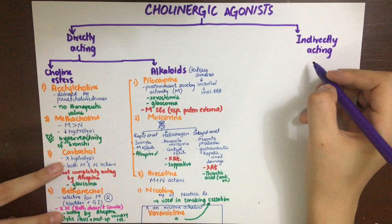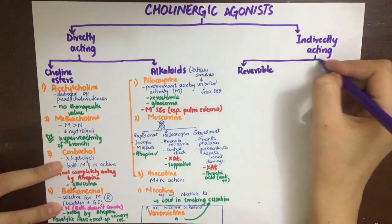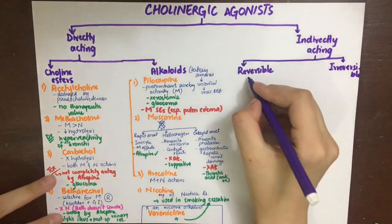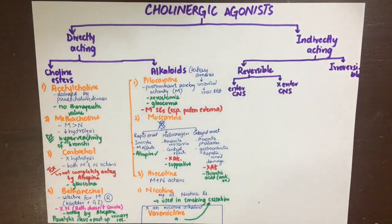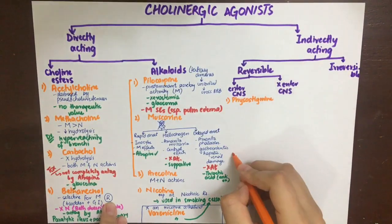The indirectly acting cholinergic agonists do not act directly on receptors; they act on the acetylcholinesterase enzyme and inhibit it, so synaptic acetylcholine levels increase because acetylcholine is not degraded. These drugs can be divided into those which reversibly inhibit the enzyme and those which irreversibly inhibit it. The reversible ones can be further divided into those which can enter the CNS and those which cannot. Reversible cholinergic agonists that can enter the CNS include physostigmine, donepezil, and tacrine.